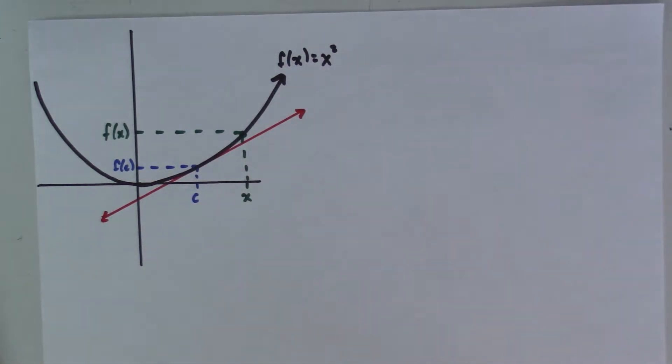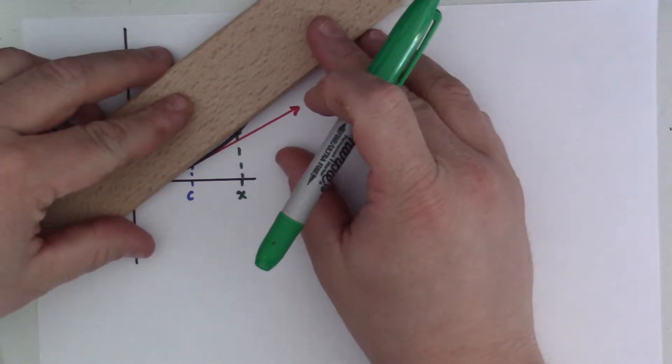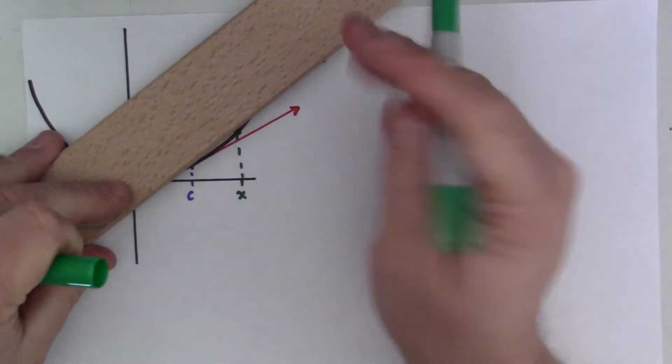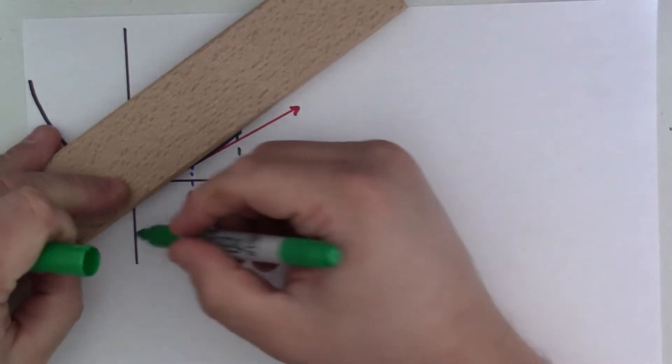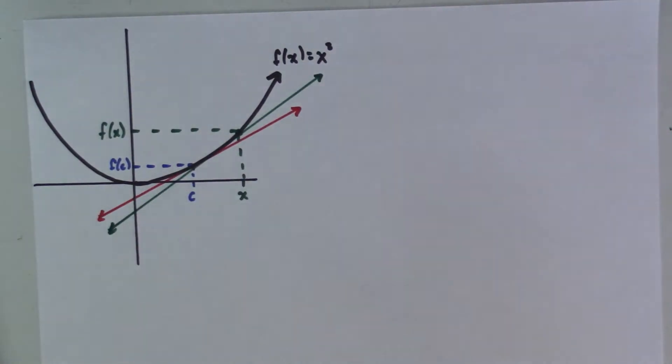And we started this discussion by discussing that I could take a secant line, so I take any other value on this curve, and I draw a line between it and the one that I'm interested in. And as those two points get closer and closer together, that secant line behaves a lot more like the tangent line that I'm interested in.